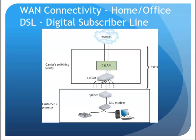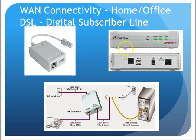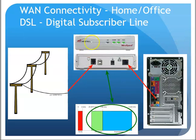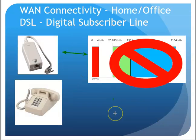The provider had a DSLAM — essentially a multiplexer at their site — that would take the two combined signals coming from your house and pull them back apart, sending phone traffic to the phone switching equipment and data out to the internet. At your site, a DSL modem combined the phone and computer signals together, and a splitter split the incoming signal between the phone and the modem, so internet data went to the modem and phone data went to the phone.